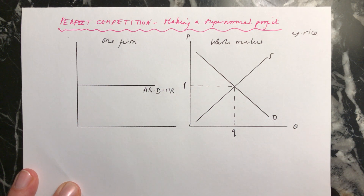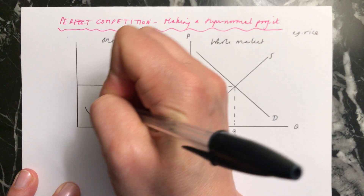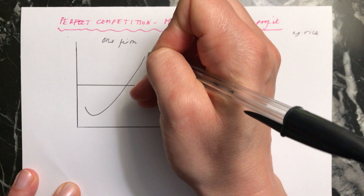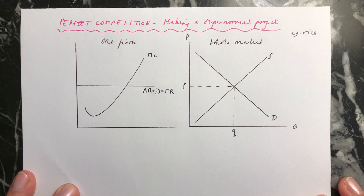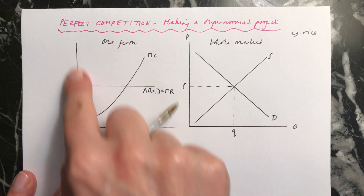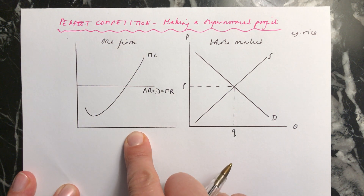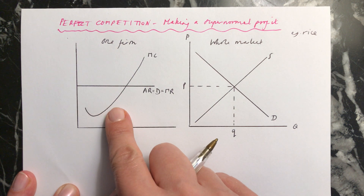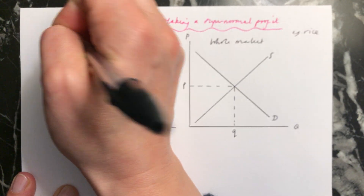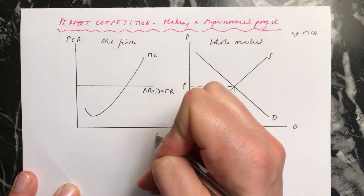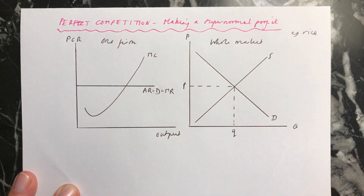Then we need our marginal cost curve. We know that this firm is going to be producing where marginal cost equals marginal revenue because they're profit maximizing. Remember on this diagram the labeling: we're looking at price, cost, and revenue on the y-axis, and output on the x-axis.